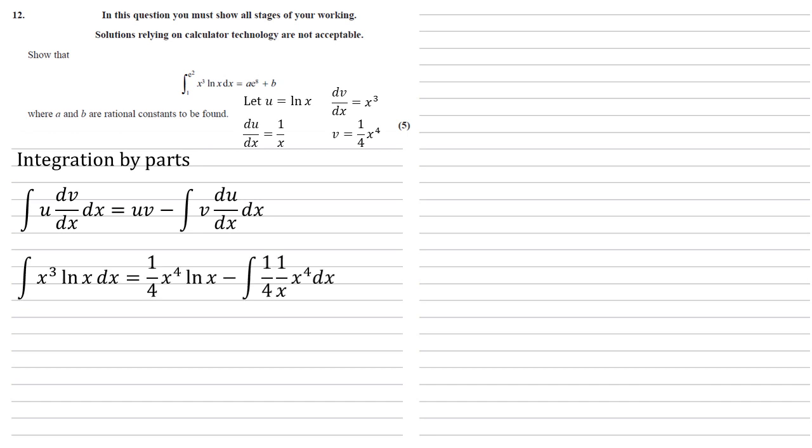Therefore, our integral without the bounds x cubed ln x dx is going to equal our u times our v. So a quarter x to the power of four ln x minus the integral of v, that's a quarter times x to the power of four times by du dx, that's the one over x there. So we can just simplify that last term. One over x times x to the four is x cubed.